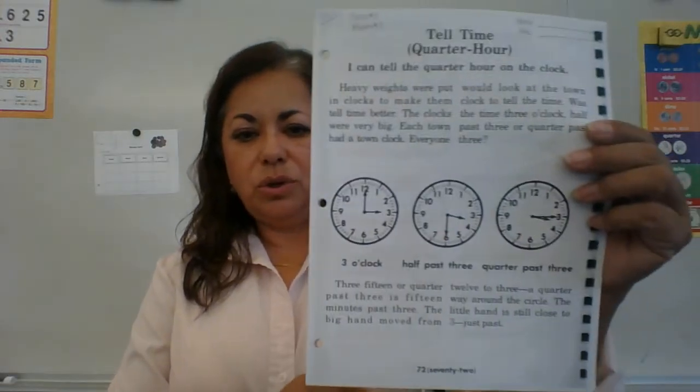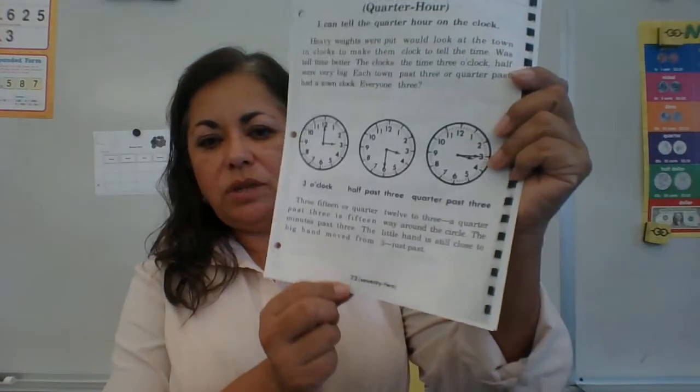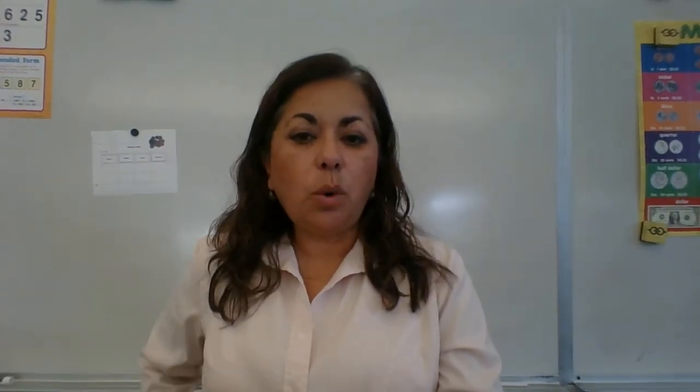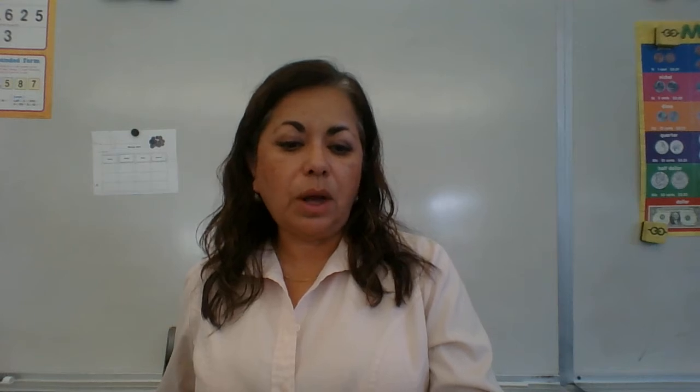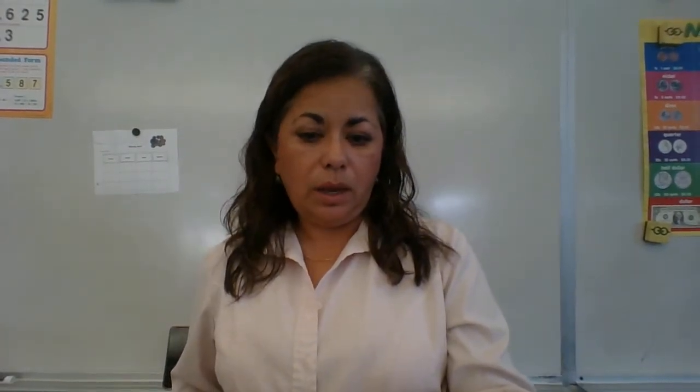Go to your page on telling time — it says page 72 on the bottom. Follow me as I read it. It says 'Tell time a quarter of the hour. I can tell the quarter hour on the clock.' It says heavy weights were put in clocks to make them tell time better. The clocks were very big, and each town had a town clock.